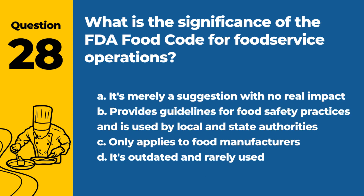Question 28. What is the significance of the FDA food code for food service operations? A. It's merely a suggestion with no real impact. B. Provides guidelines for food safety practices and is used by local and state authorities. C. Only applies to food manufacturers. D. It's outdated and rarely used. Answer: B. The FDA food code is significant as it guides food safety practices and is often the basis for local and state health regulations.